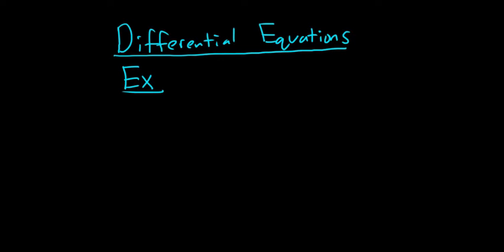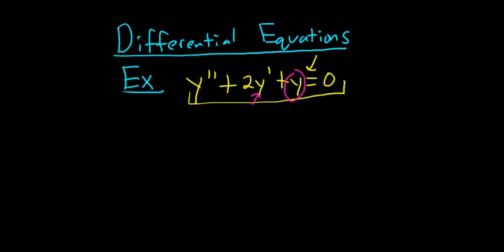Say we had y double prime plus 2y prime plus y equals 0. This is an example of a differential equation. It's an equation with an unknown function. In this case, the unknown function is y. Here you have the first derivative and here you have the second derivative.